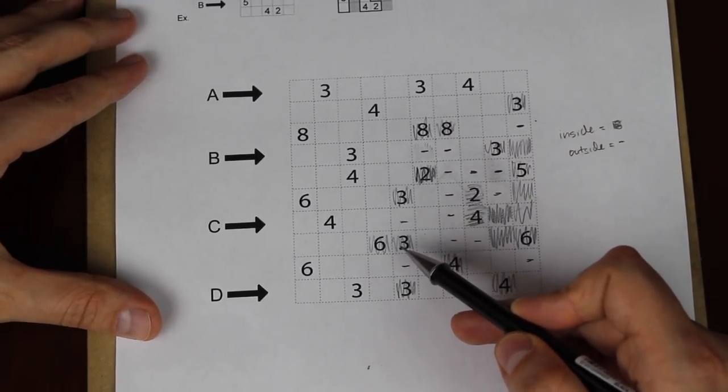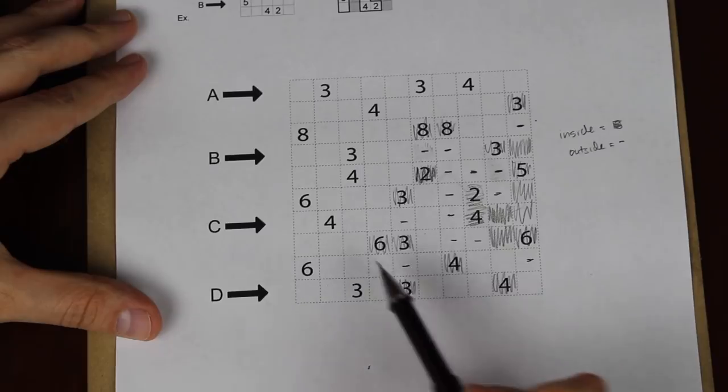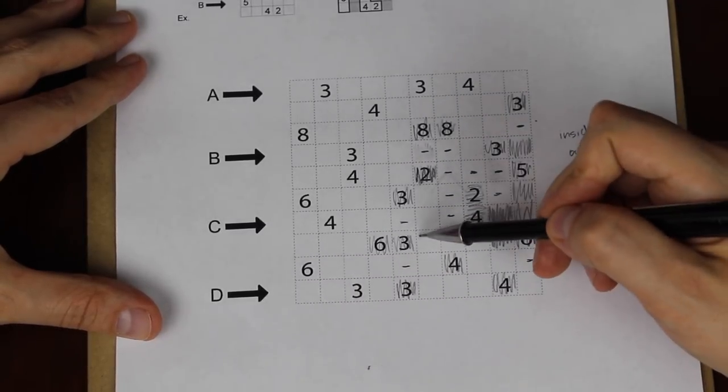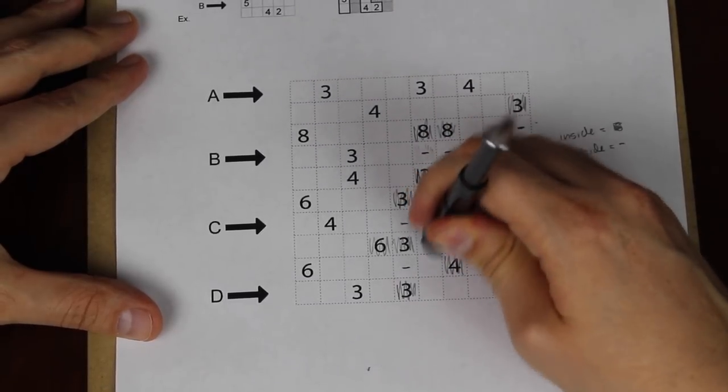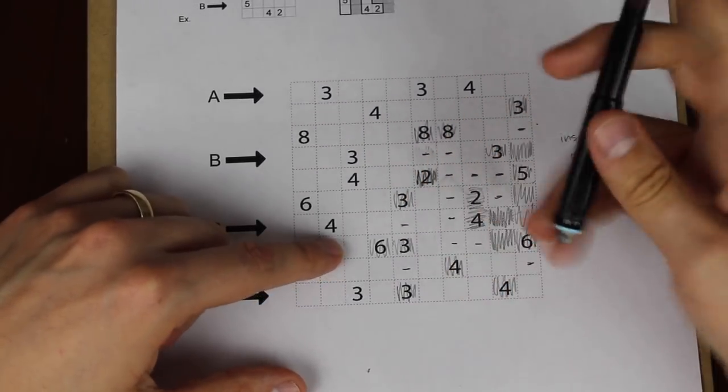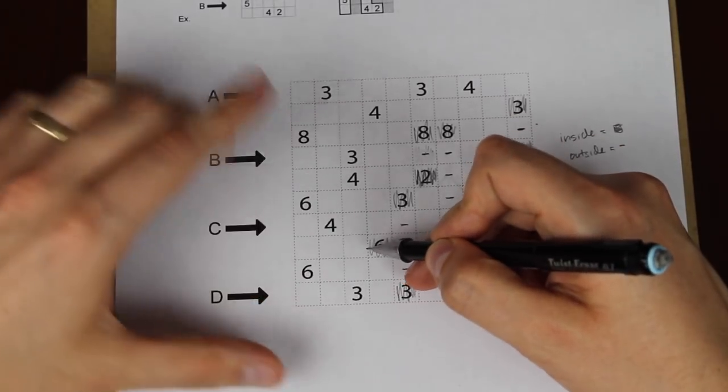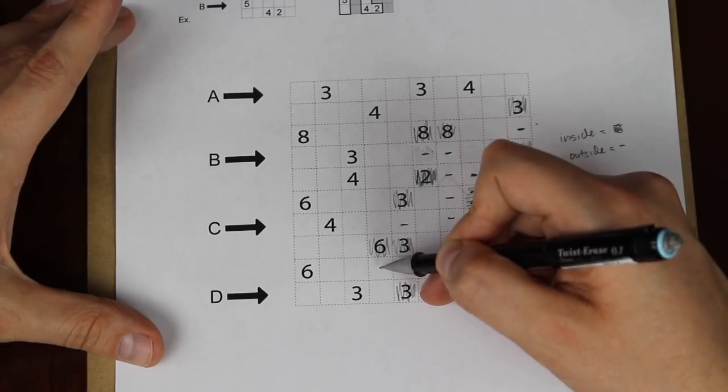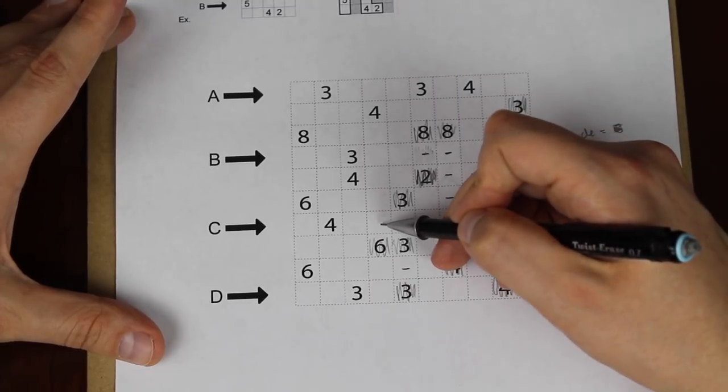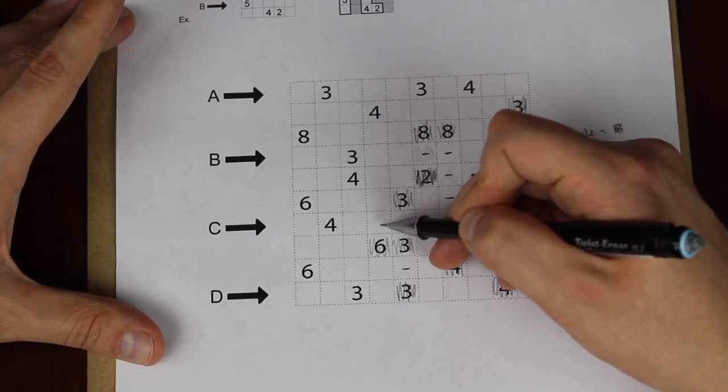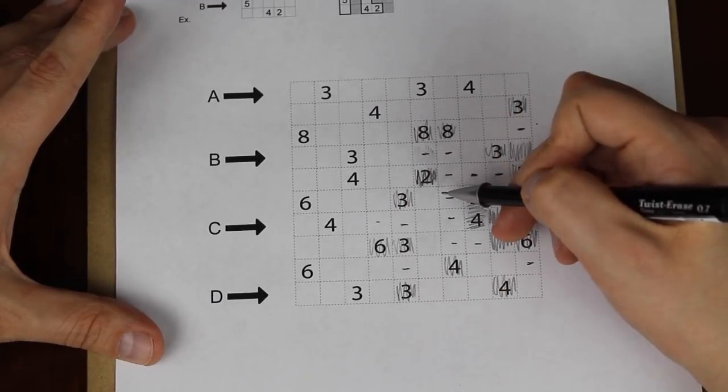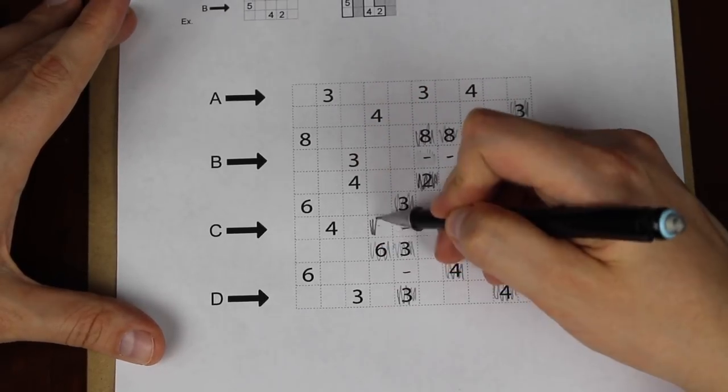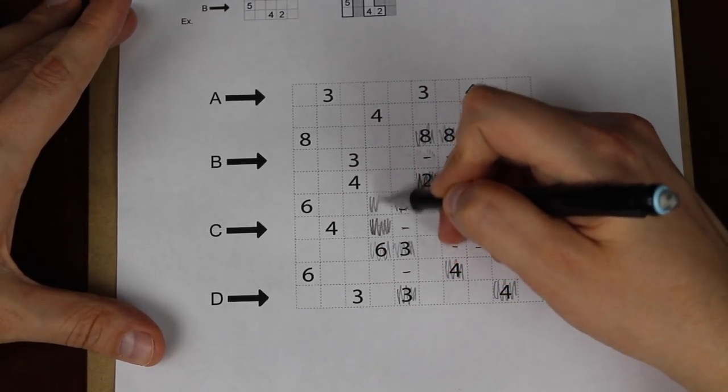Now here's an interesting one. This 6 here is attached to a 3. That means it can never see more than 3 squares in a given direction here, horizontally. It could either be something like that, or it could be on the other side, here. But in any case, it can see a maximum of 3 squares here. So 3, 4, 5 means that this square has to be filled, has to be inside of the loop. If this were outside, this 6 could not see 6 squares that are inside the loop. That gives us that square, which gives us this one as well.